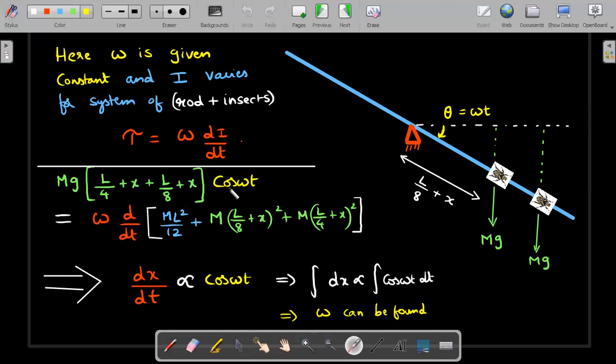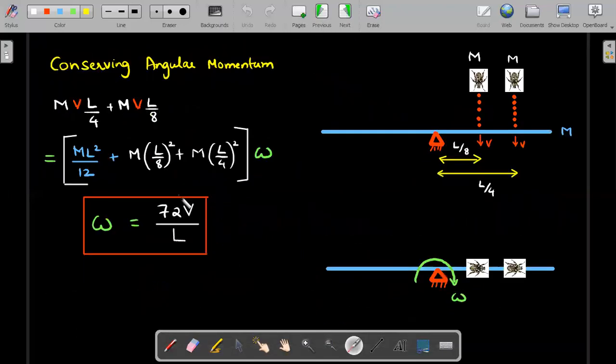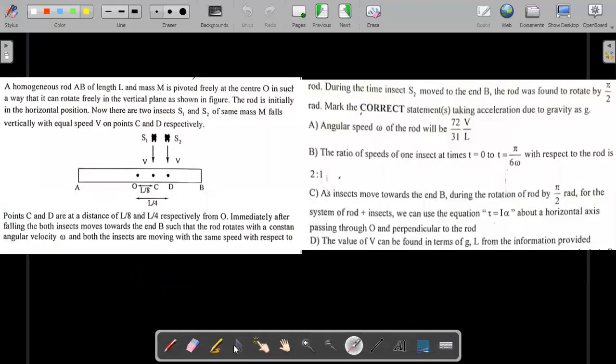You can nicely say that dx by dt on the right-hand side would be proportional to cos Omega t here. So you can integrate from the information that the second insect walks to the end, and time taken is from 0 to pi by 2 Omega because the angle has been rotated. The answer was theoretical and he didn't ask about the calculation. So I made an idea that Omega can be found upon integrating. Once you find Omega, you go back to the first equation to find the value of V in terms of G and L only.